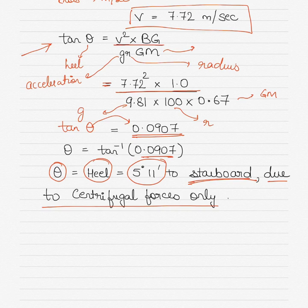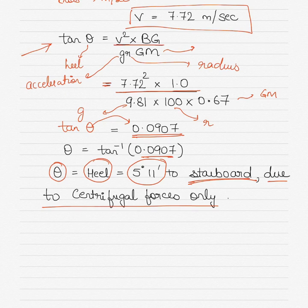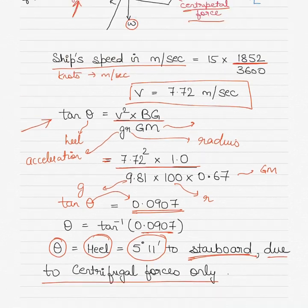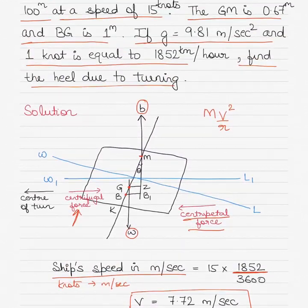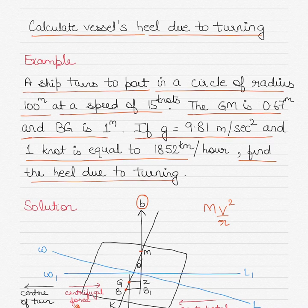In practice, this angle of heel will be slightly smaller because a small angle of heel to port also develops, so the resultant angle will still be to starboard but of a slightly lesser value than 5 degrees 11 minutes. That's pretty much it — if you're ever asked about vessels heeling due to turning, this is the theory and the example of calculation behind it. Thanks, bye for now.